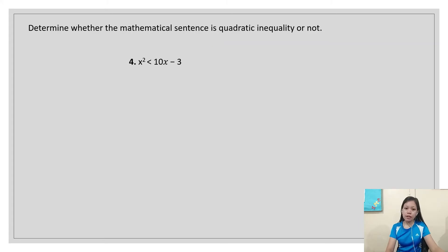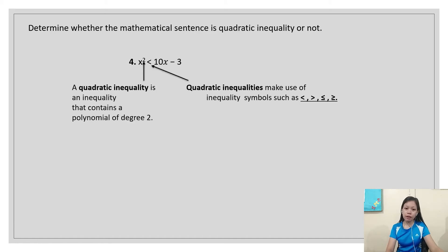Another example: x² < x - 3. A quadratic inequality is an inequality that contains a polynomial of degree 2, and makes use of inequality symbols such as less than, greater than, less than or equal, or greater than or equal. Since we have the symbol less than, this equation is a quadratic inequality.